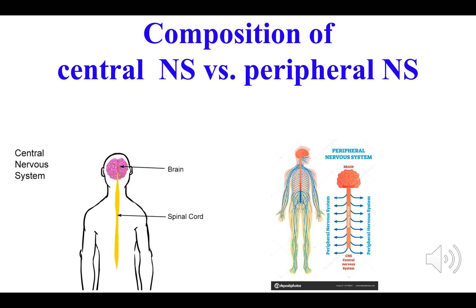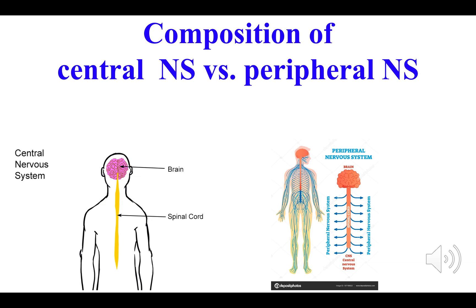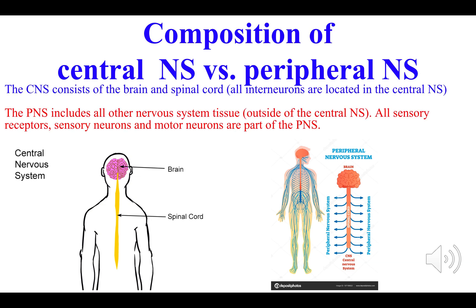Now let's talk about the key differences in broad terms between the two major divisions. In terms of composition, the central nervous system is made up of the brain and the spinal cord. The peripheral nervous system — peripheral meaning 'outside of' — is all the nerves outside of the brain and the spinal cord.